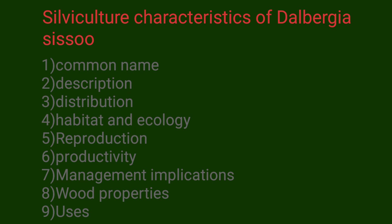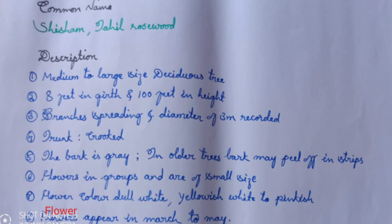The silvicultural characteristics of Dalbergia sissoo cover common name, description, distribution, habitat and ecology, reproduction, productivity, management implications, wood properties, and uses. The common name is Shisham or hill rosewood. It is a medium to large-sized deciduous tree, eight feet in girth and hundred feet in height, with spreading branches and a diameter of 3 meters recorded. The trunk is crooked, bark is gray, and in older trees bark may peel off in strips. Flowers are small, dull white to yellowish-white or pinkish, appearing from March to May.